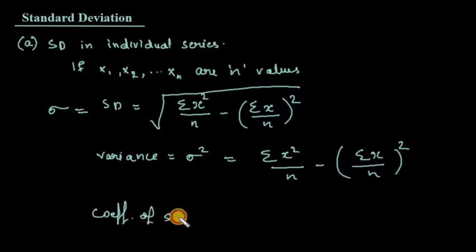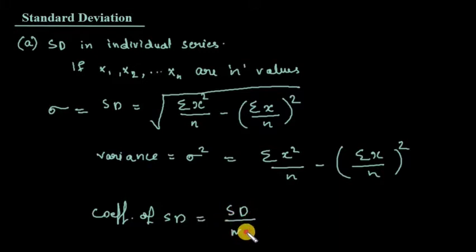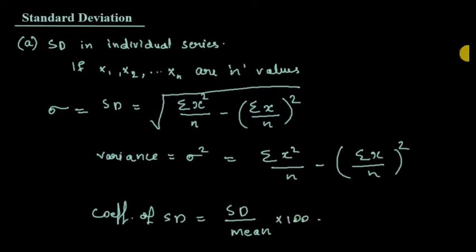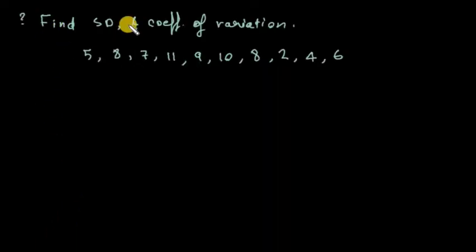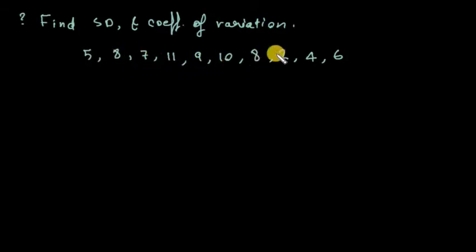The coefficient of standard deviation equals standard deviation divided by mean, multiplied by 100. Problem number one: find the standard deviation and coefficient of variation for the data: 5, 8, 7, 11, 9, 10, 8, 2, 4, and 6.